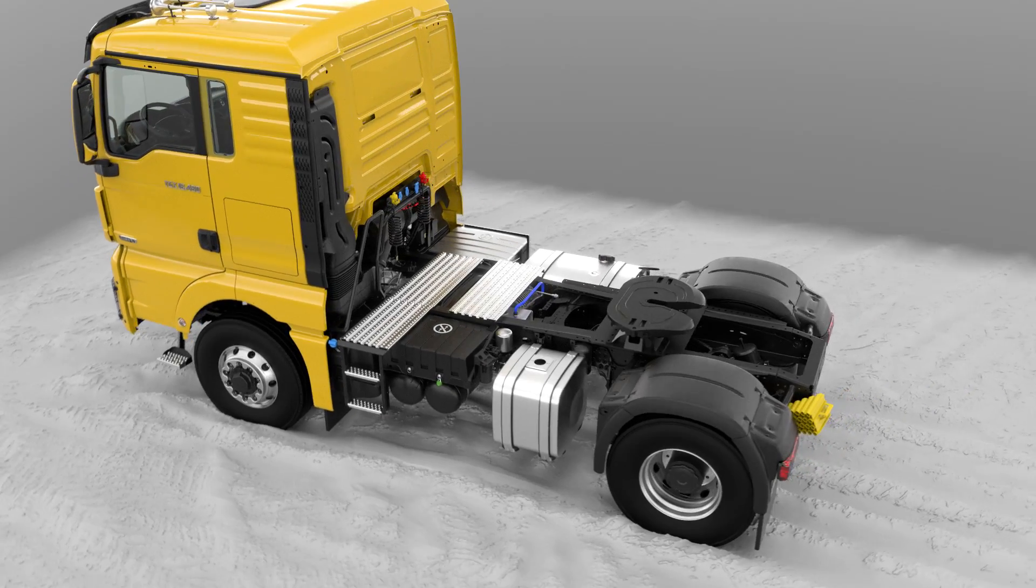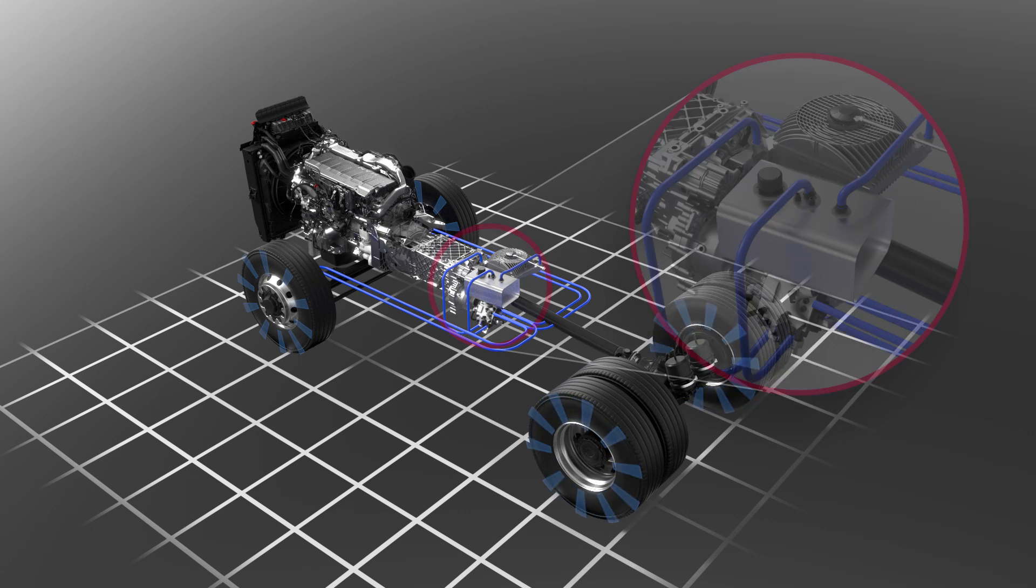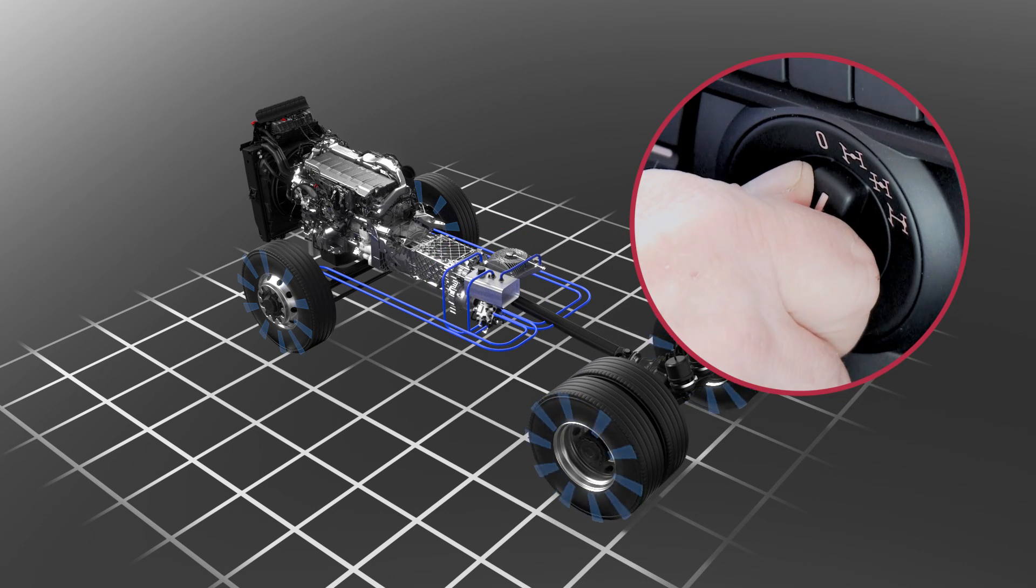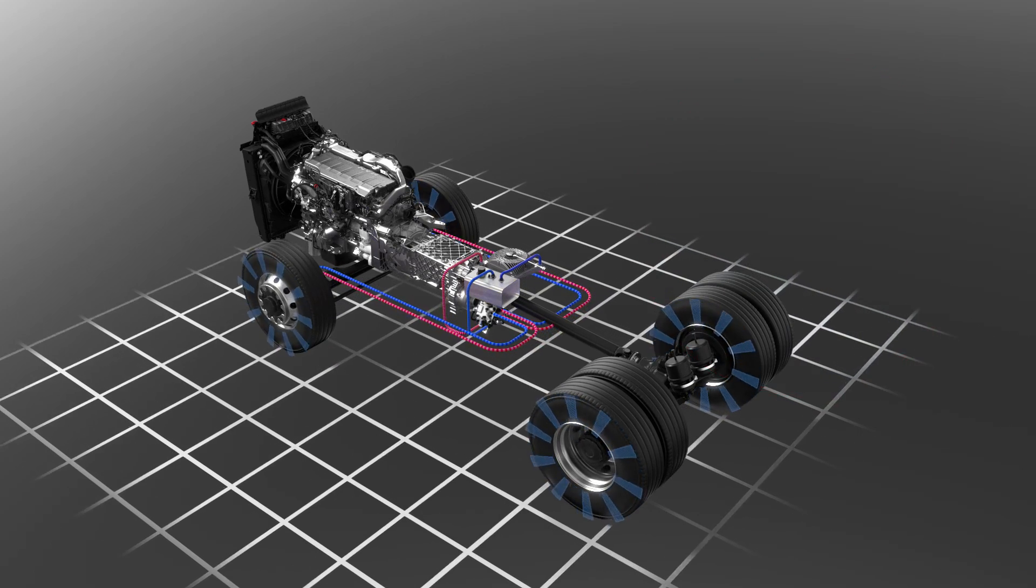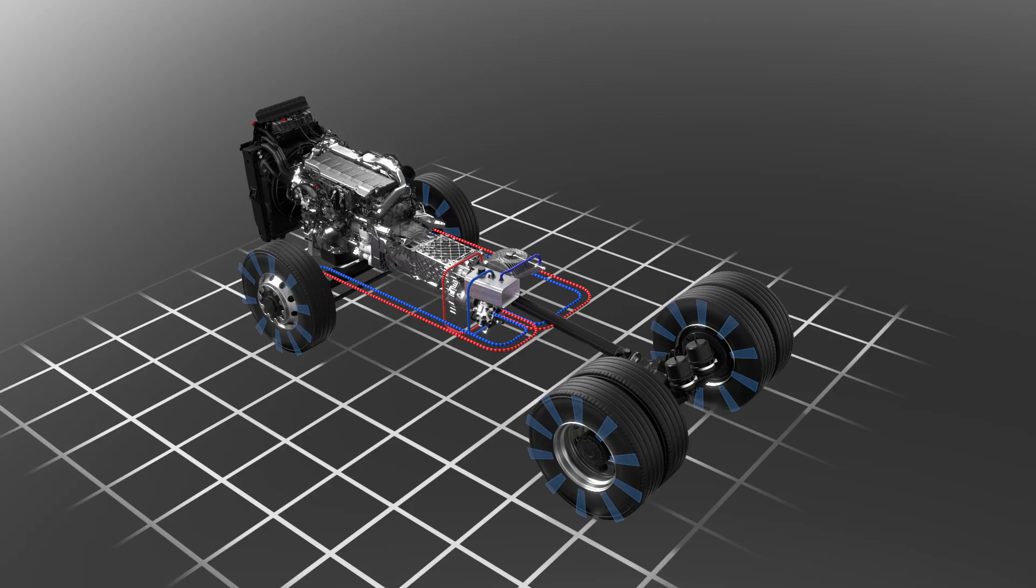If the MAN HydroDrive is engaged in a situation where extra traction is required, the hydraulic pump flanged onto the gearbox output will generate pressure of up to 420 bar. Hydraulic lines transfer the pressure to the wheel hub motors, where torque is generated up to 7,280 Nm per wheel.